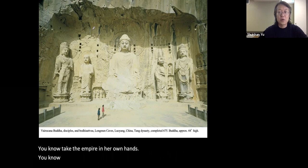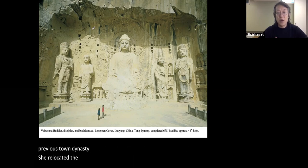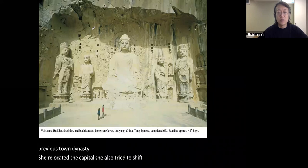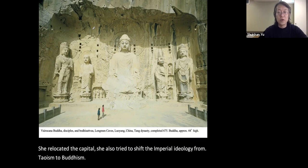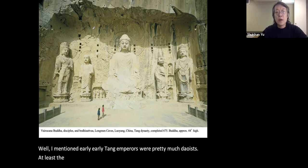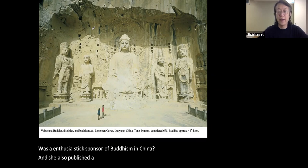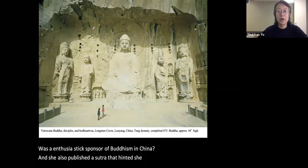Empress Wu tried to differentiate herself from the previous Tang dynasty by relocating the capital and shifting the imperial ideology from Taoism to Buddhism. Early Tang emperors were mostly Taoists, but Empress Wu was an enthusiastic sponsor of Buddhism in China. She also published a sutra that hinted she was a reincarnation of a Buddha.